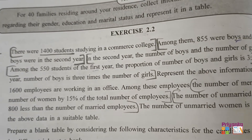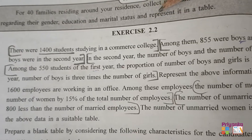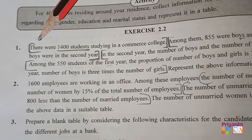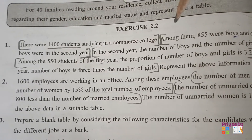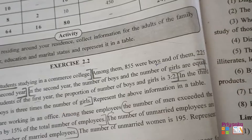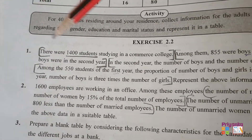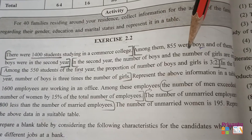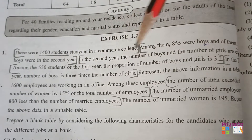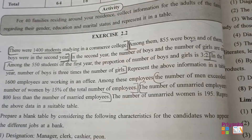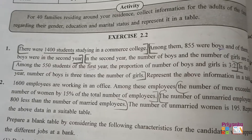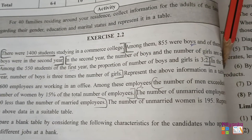Chapter 2, Presentation of Data, Exercise 2.2 — that is for tabulation. The information given for the first question is on page number 42. There were 1400 students studying in the Commerce College. Among them 855 were boys, and of them 225 boys were in second year. In the second year the number of boys and girls are equal. Among 550 students of the first year the proportion of boys to girls is 3 to 2. In the third year the number of boys is 3 times the number of girls. Represent the above information in the tabulation.